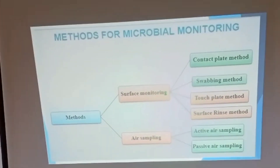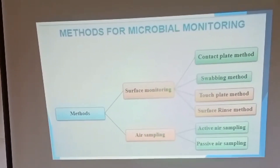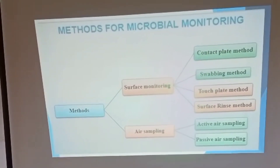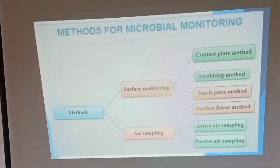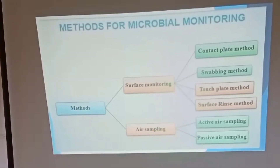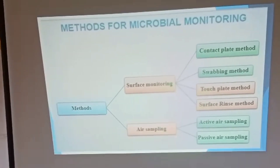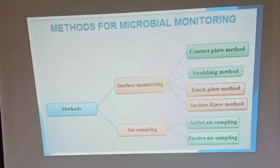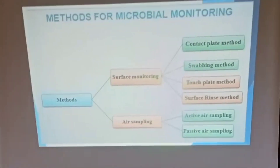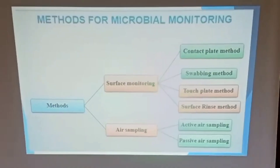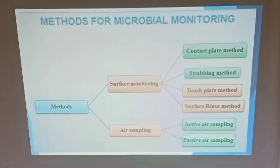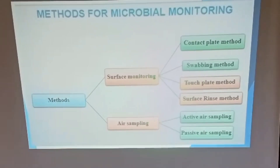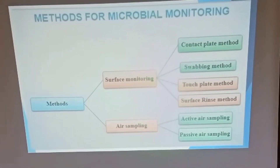The method for Microbial Monitoring is divided into surface monitoring and air sampling. Surface monitoring is divided into the contact plate method, swabbing, and touch plate or surface raised metal methods. Air sampling is divided into active air sampling and passive air sampling. We will discuss the contact plate method, swabbing, and the air sampling methods.